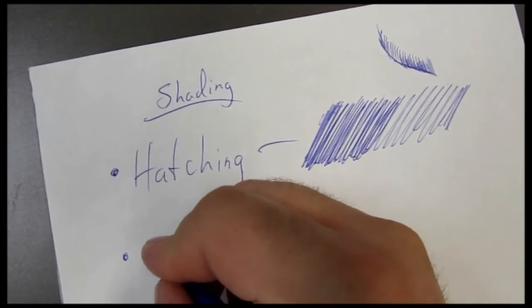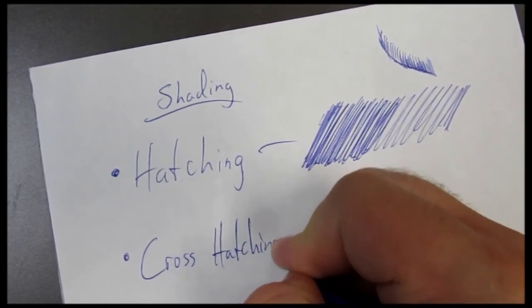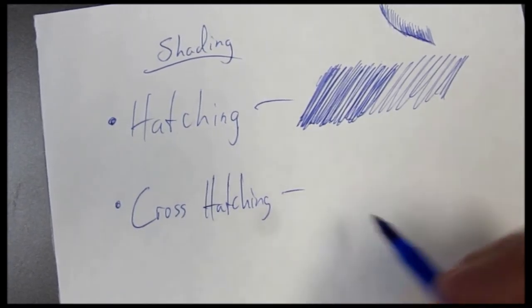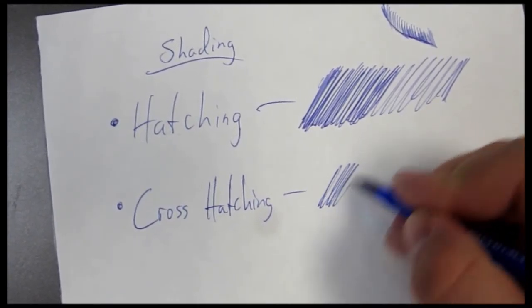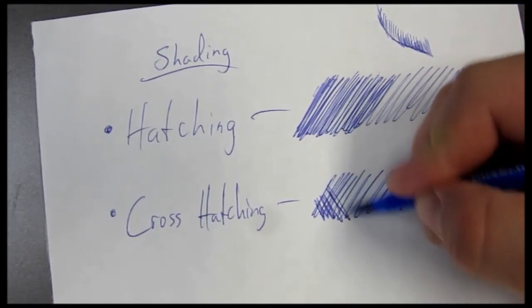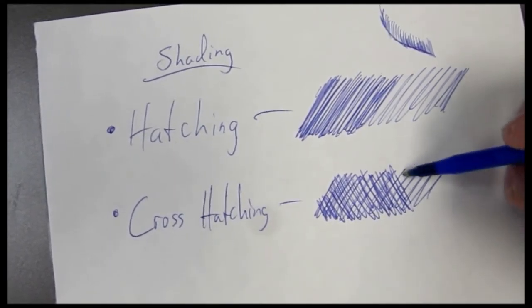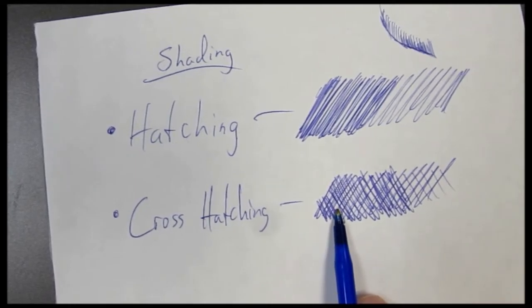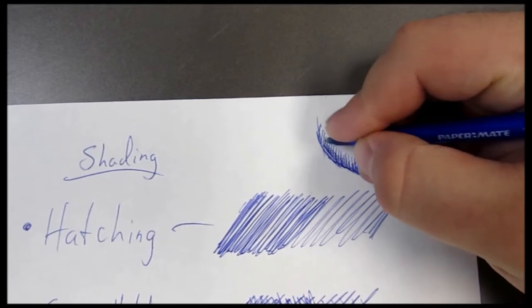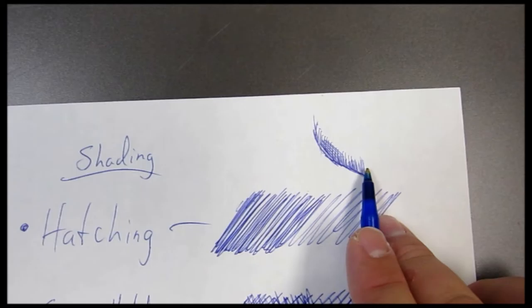Next one we have is cross hatching. Hatching, hatching, cross in front of it for this one. Cross hatching. Diagonal lines going in one direction. But then you come back and go across them again. Close together, darker the shade, farther apart, lighter the shade. Come back to our guy. Changes the direction, changes the way that some of the lines are laid out. All right.